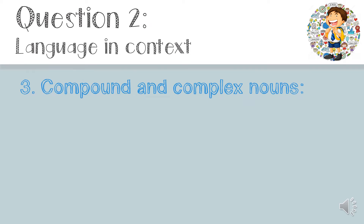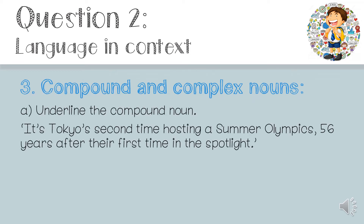Question three: compound and complex nouns. Number A — underline the compound noun. A compound noun is two nouns that are joined to make one new noun with a new meaning. The sentence given is: 'It's Tokyo's second time hosting a Summer Olympics, 56 years after their first time in the spotlight.' We have to search for two nouns that made sense on their own but are now joined to make a new noun. In this case, it is 'spotlight'.